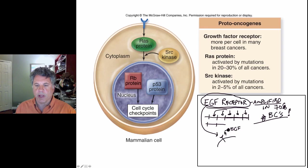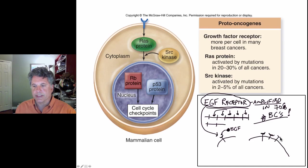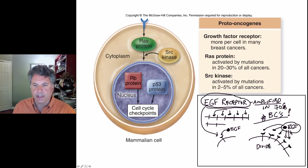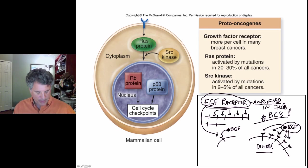In a cell where the EGF receptor gene has been greatly amplified, there are many more EGF receptor proteins studding the surface. Even low concentrations of EGF have a very good chance of being detected by the numerous receptors on the cell surface, leading the cell to think it should grow and divide even at very low concentrations of the growth factor.